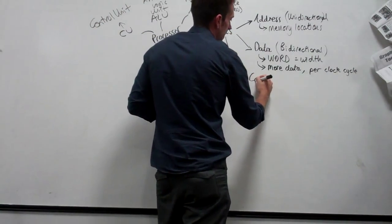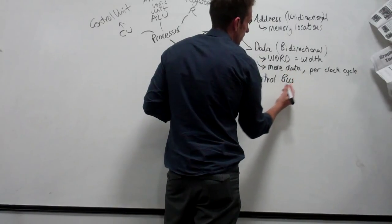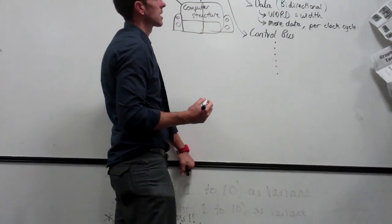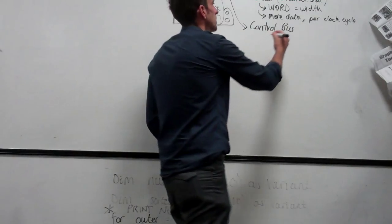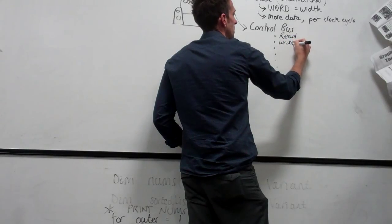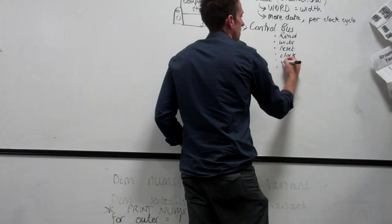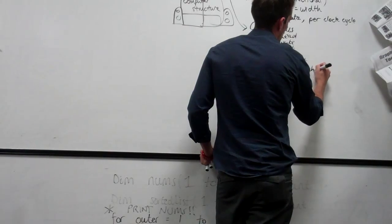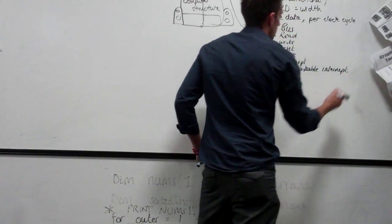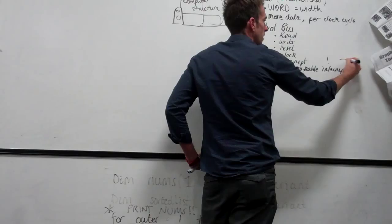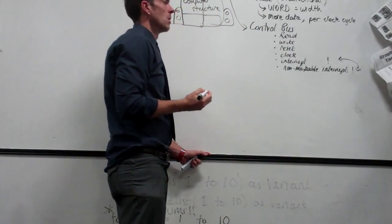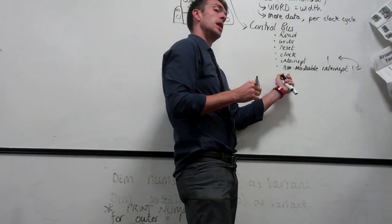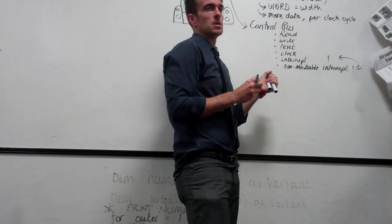Another bus we talked about is the control bus, which has six lines of control. You need to be able to describe the function each carries out. What are they? Read, write, reset, clock, interrupt, and non-maskable interrupt. What is the difference between an interrupt and a non-maskable interrupt? A non-maskable interrupt can't be ignored. An interrupt — you can ignore it. Reset puts it back to its initial state. Clock is used to synchronise all the operations inside the processor.